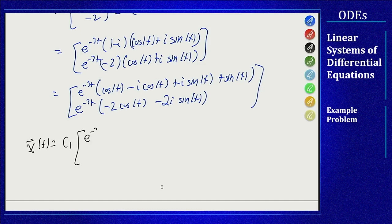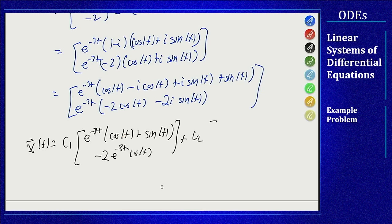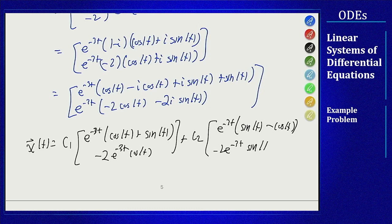We get c₁ e to the minus 3t, the real part here will be cosine of t plus sine of t, minus 2 cosine of t on the bottom. C₂ e to the minus 3t, on the imaginary part we have sine minus cosine, and negative 2 sine of t on the bottom.